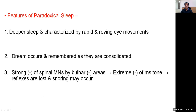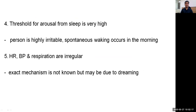Dreams occur during REM sleep and they are remembered as they are being consolidated. Strong inhibition of spinal motor neurons by the bulbar inhibitory area causes extreme inhibition of muscle tone, thereby reflexes are lost. As the tone in the pharyngeal muscles also decreases, snoring may be a common finding in this phase. The ratio for arousal from sleep is very high, the person is highly irritable, and spontaneous waking occurs in the morning.